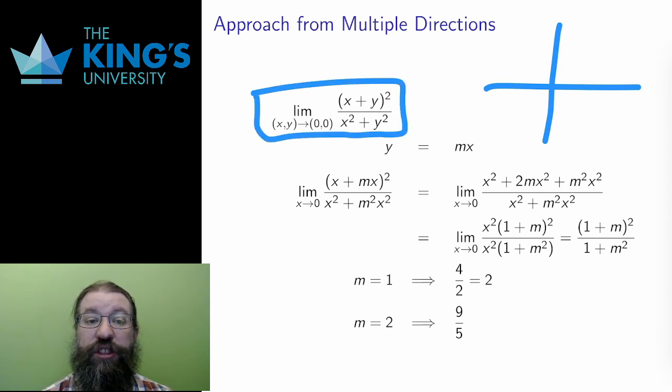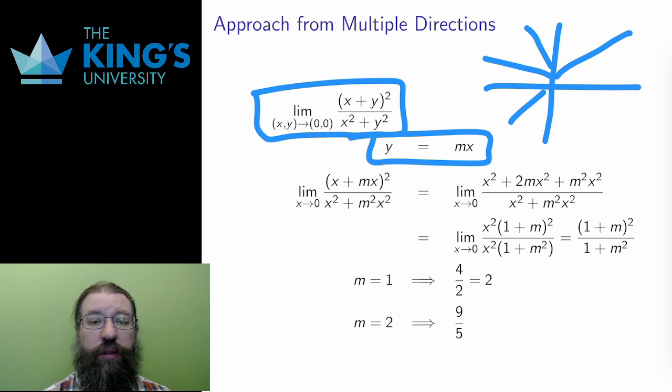Consider this limit of a two-variable scalar field. I can approach the origin along any straight line, and a straight line through the origin is the equation y = mx. If I approach on a fixed line, well then I can replace y with mx in the expression, and that turns this into a single variable limit.